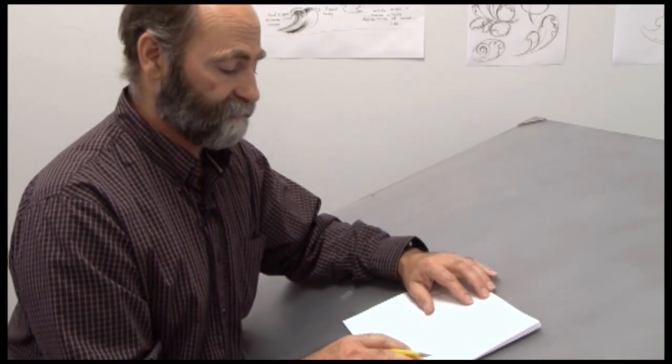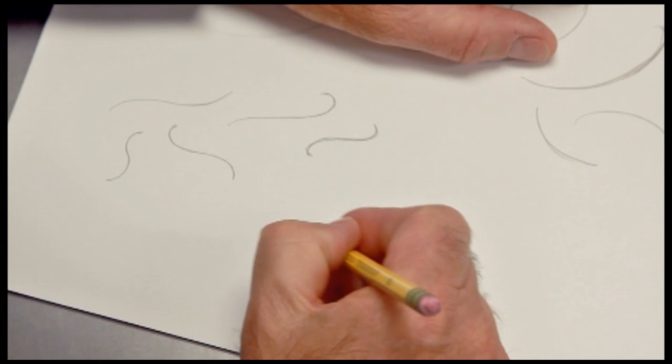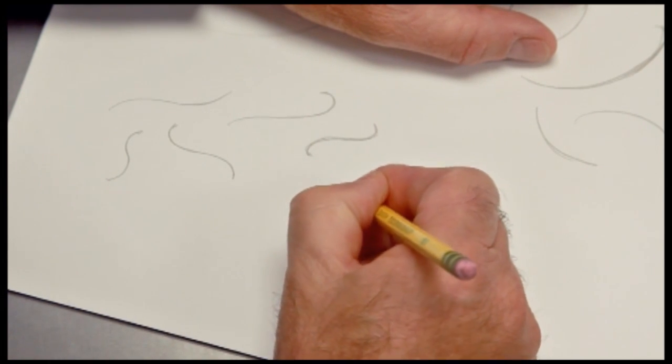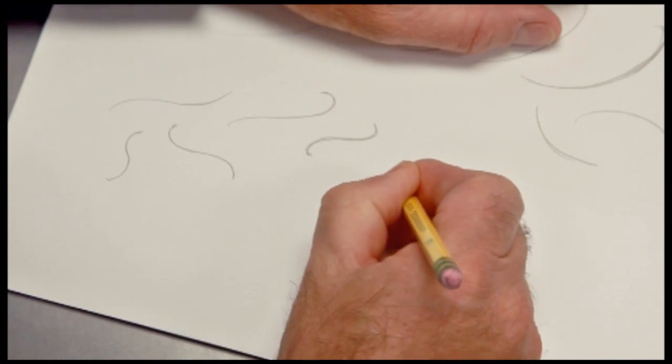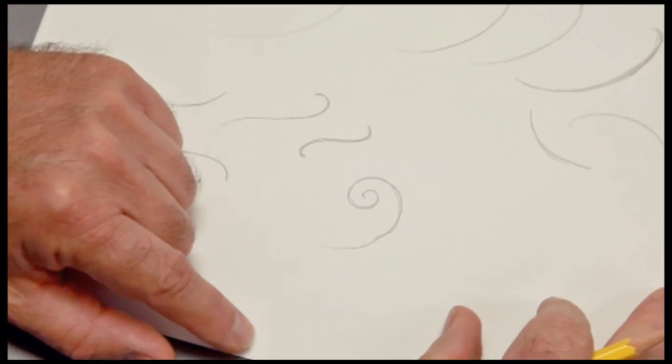Now the third line, the last line of the Three Amigos, is what I call the scroll line. Which is really nothing more than a hook line that keeps going around and around and forms a scroll.